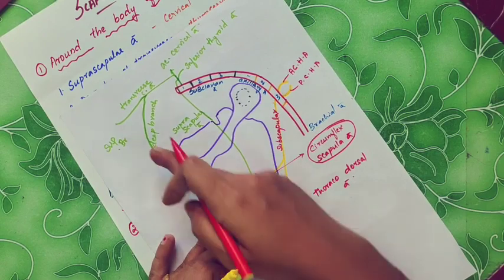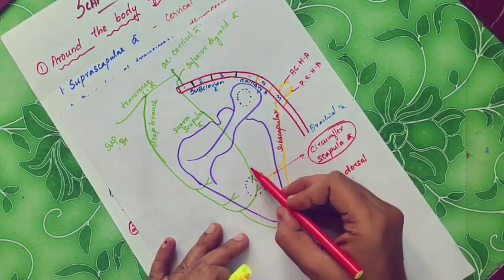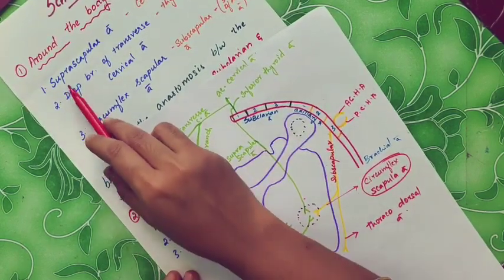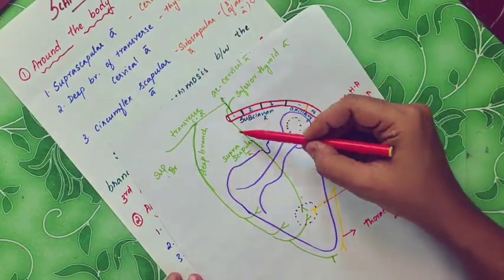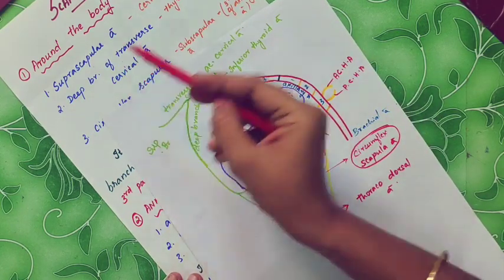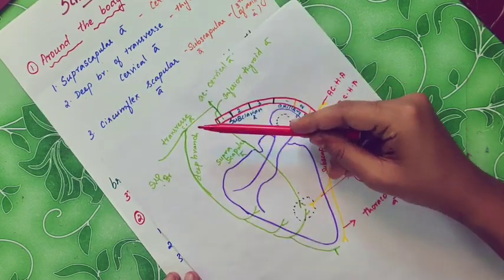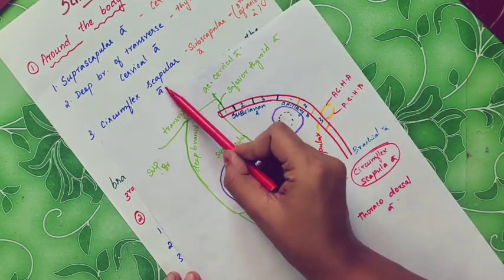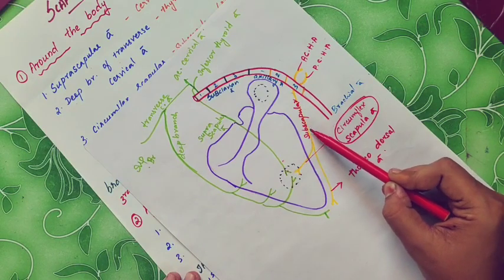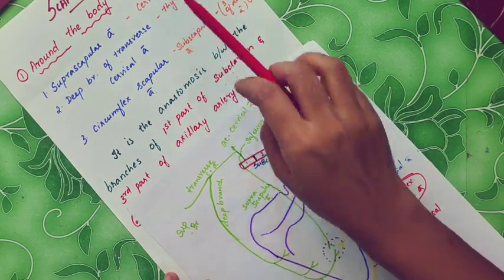The thoracodorsal artery is also known as the deep branch of the transverse cervical artery. So, the three arteries forming the anastomosis around the body of the scapula are: the suprascapular artery, the deep branch of the transverse cervical artery, and the circumflex scapular artery — which is the branch of the subscapular artery.